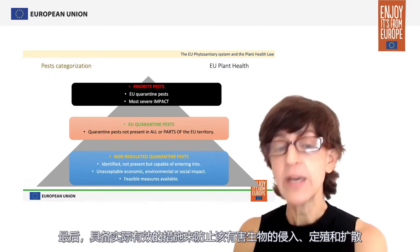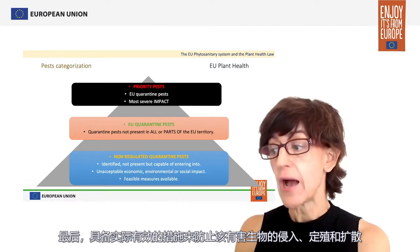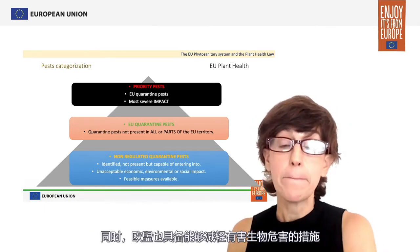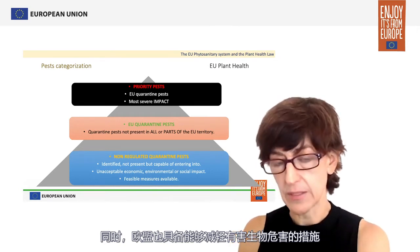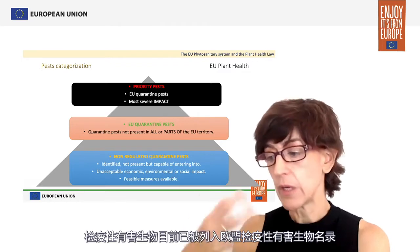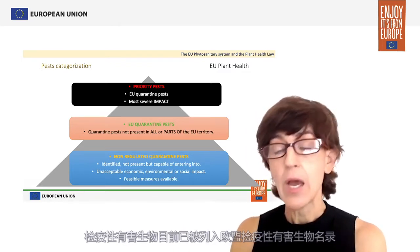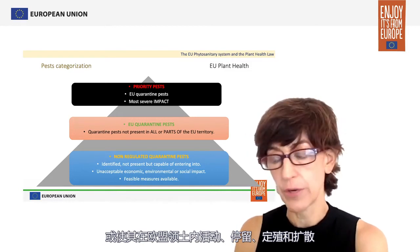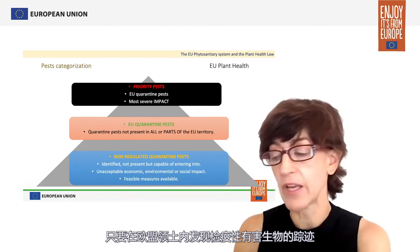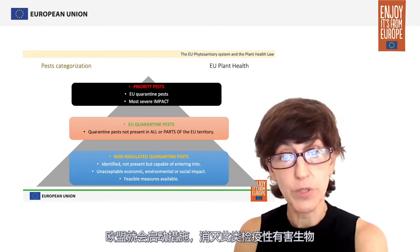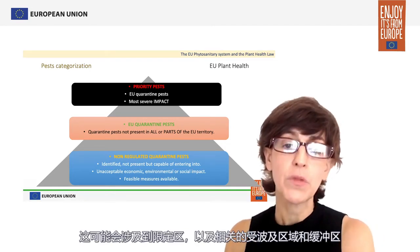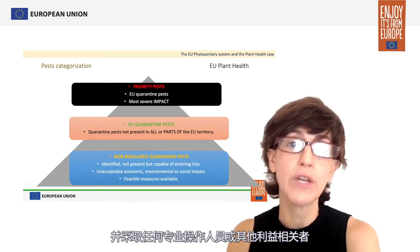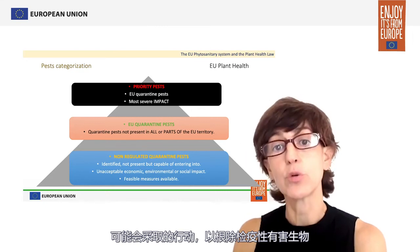Last but not least, there are feasible and effective measures available to prevent the entry, establishment, and spread of that pest, and also measures available to mitigate the risk of that pest. All quarantine pests are listed in the Union quarantine pest list, and they shall not be introduced, moved within, held, multiplied, or released in the Union territory. In case a quarantine pest is detected within the EU territory, eradication measures should be adopted, which may include the creation of demarcated zones with their relevant infested zones and buffer zones.